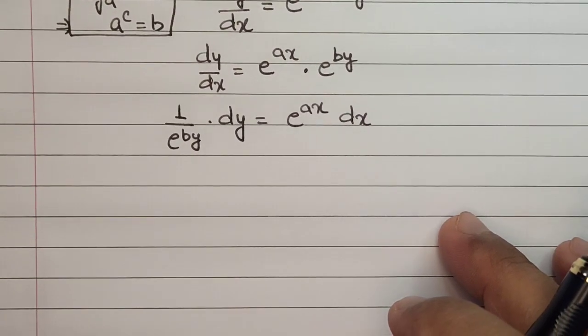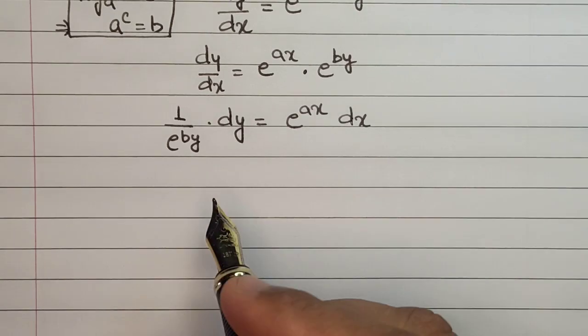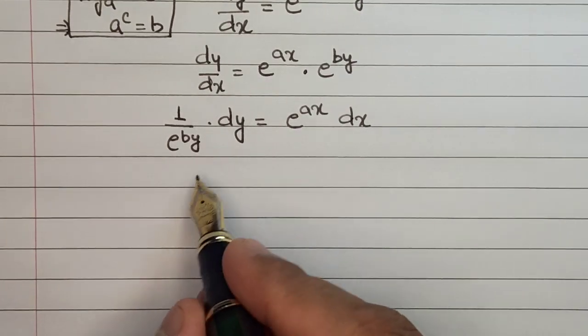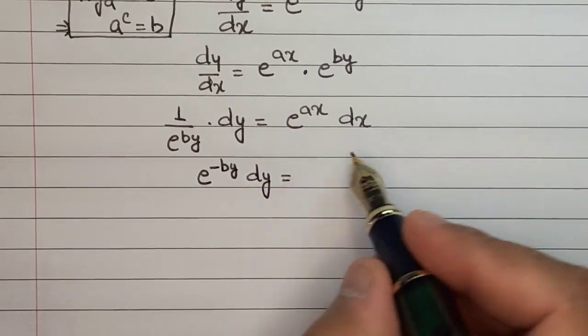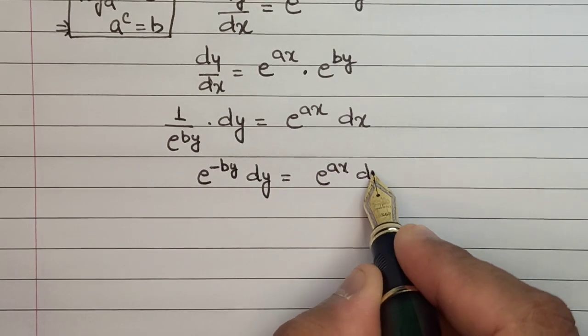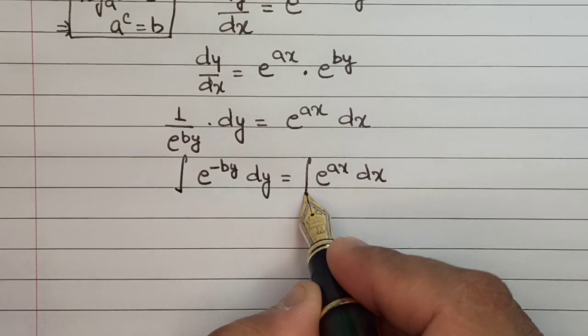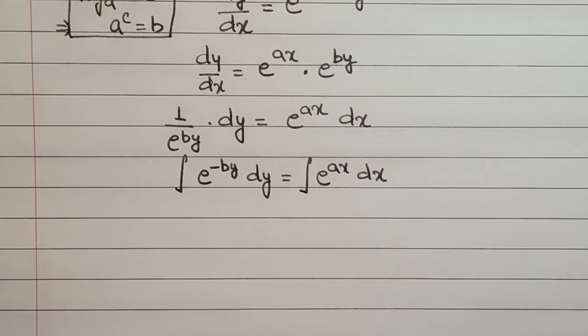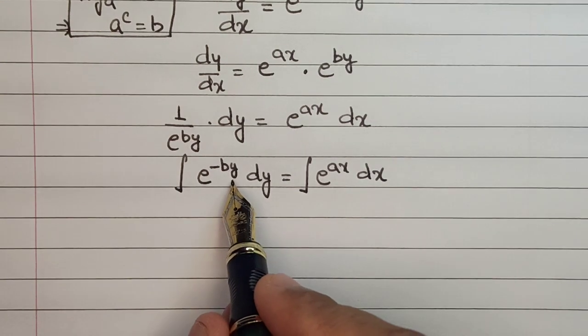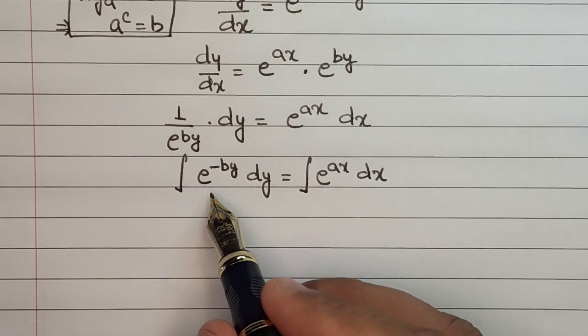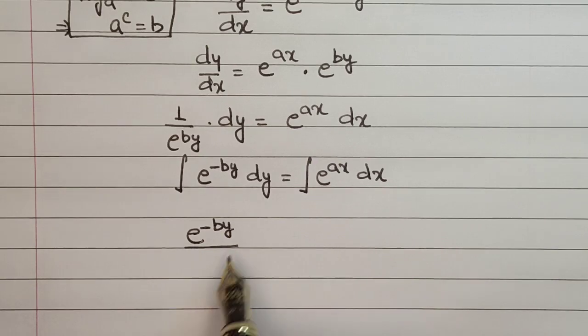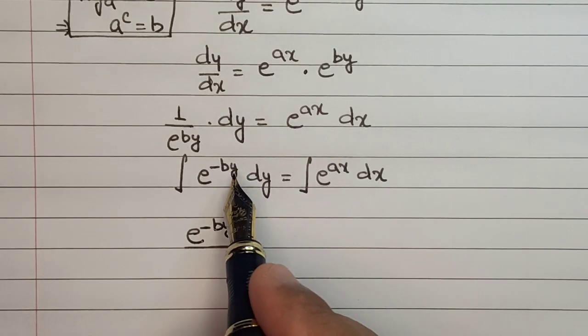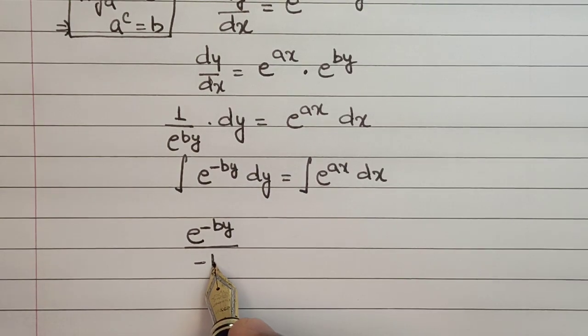After this step, we integrate on both sides. As we know, the integration of e^x is the same function, e^x. So I'll write e^(-by) divided by the differentiation of the power here, which is -b. The concept I have applied here is known as the chain rule in integration.